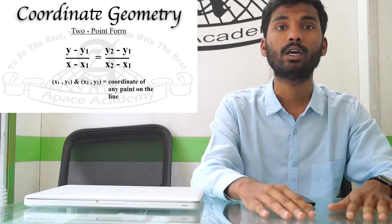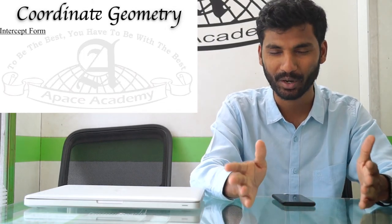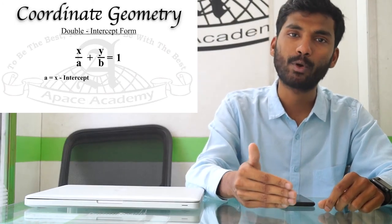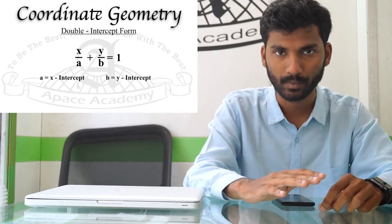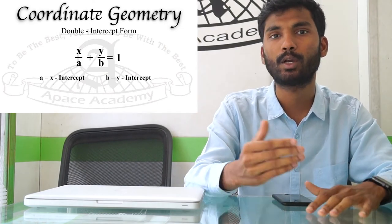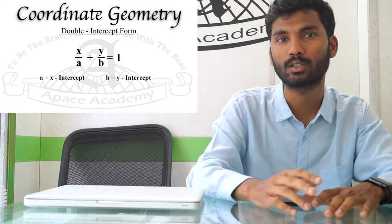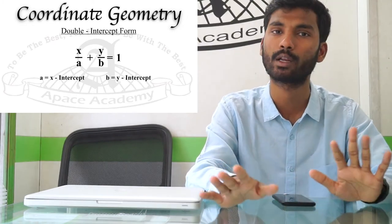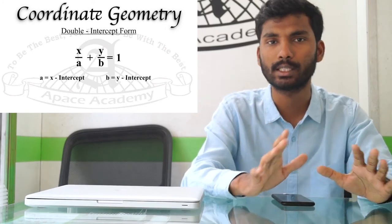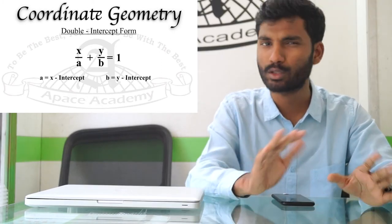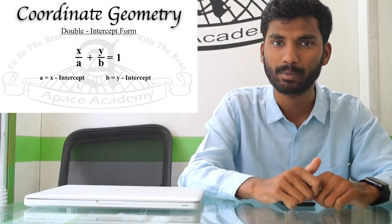The last and interesting one is double intercept form: x/a + y/b = 1, where A is the X-intercept and B is the Y-intercept. This form is interesting because it's one of the general standard equations also related to forms like ellipses and hyperbolas in higher topics. Simply substitute the values of A and B, then take LCM, cross-multiply, and get the general equation Ax + By + C = 0.